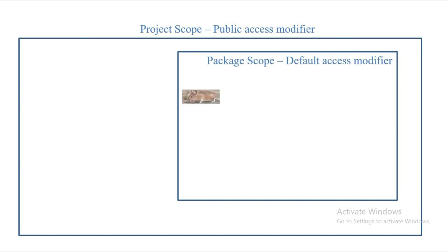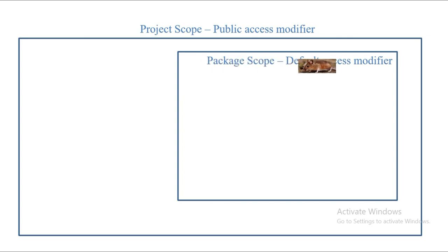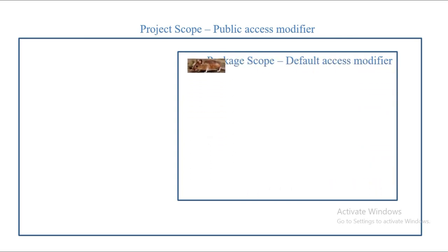Now if I have a package scope — that is, a project with multiple packages — and a default access modifier is used with my variable 'mouse', then only classes within that particular package can access my variable 'mouse'. All other classes in different packages will not be able to access it.